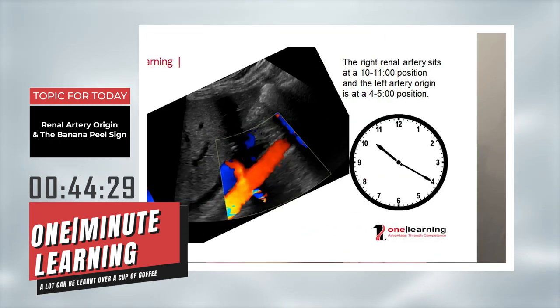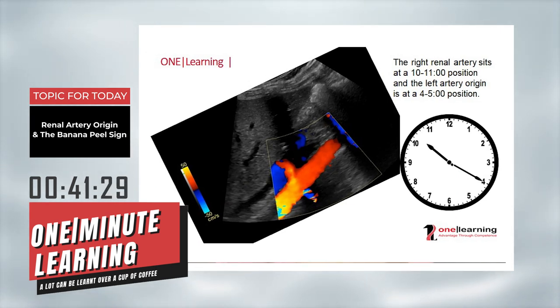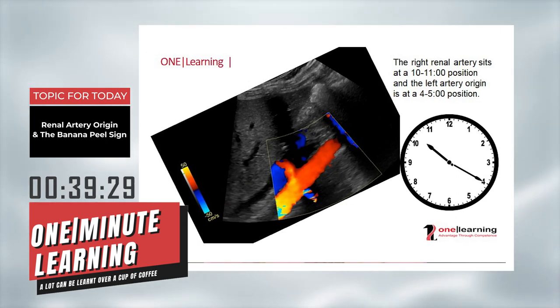In this view, we see both renal arteries emerging from the aorta like a banana peel — the right renal artery coming at around 10 to 11 o'clock and the left renal artery coming at around 4 to 5 o'clock. Now, how does that happen and how do we see it?